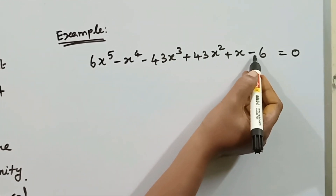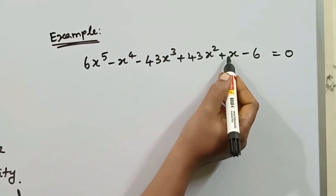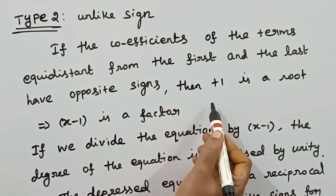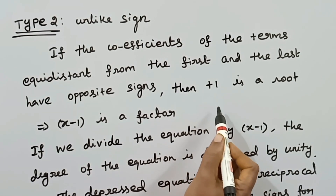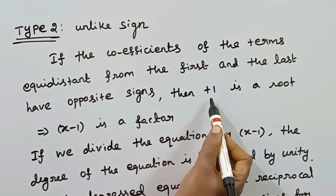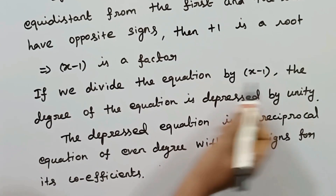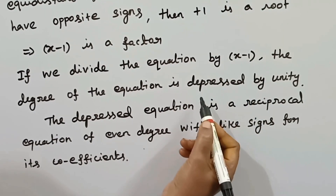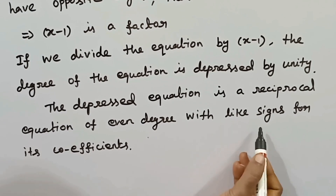In this equation, the first term and the last term have opposite signs. We discuss the minus and plus between pairs of terms — the opposite signs. For the unlike sign reciprocal equation, if we divide the equation by x minus 1, the degree of the equation is depressed by unity.